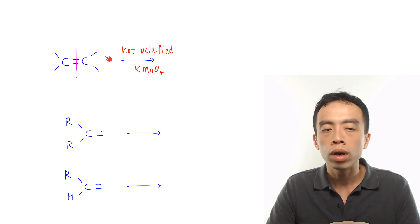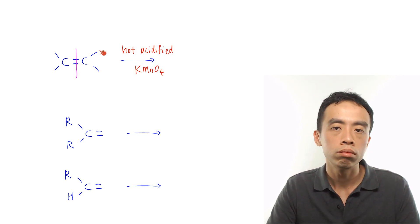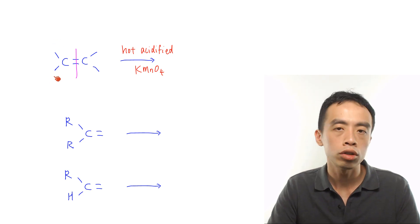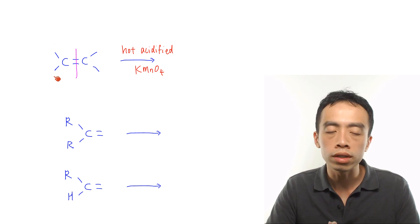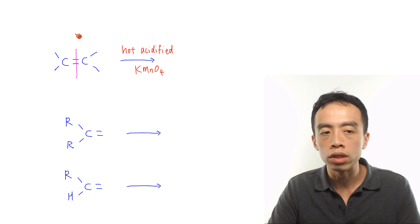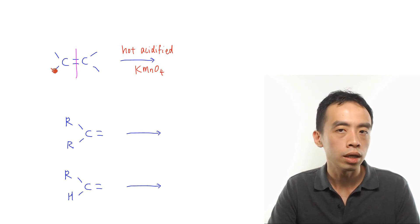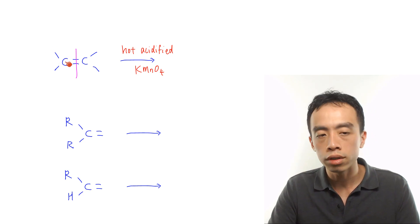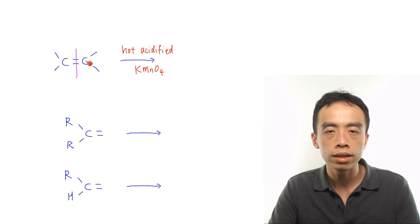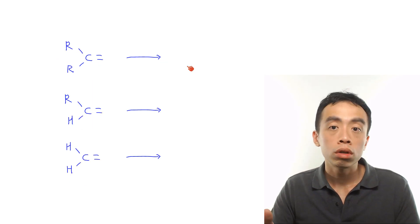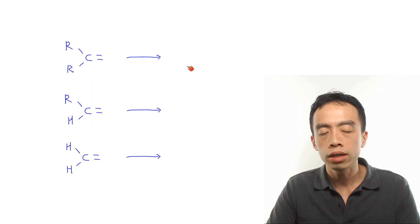What each carbon would become depends on the groups that are attached to each carbon. We have to deduce, based on the groups attached to each carbon, what each carbon would be oxidized to. There are three scenarios here.